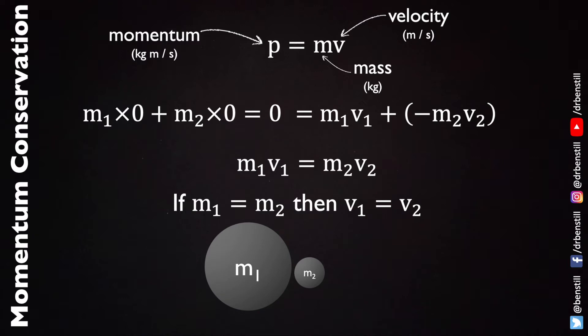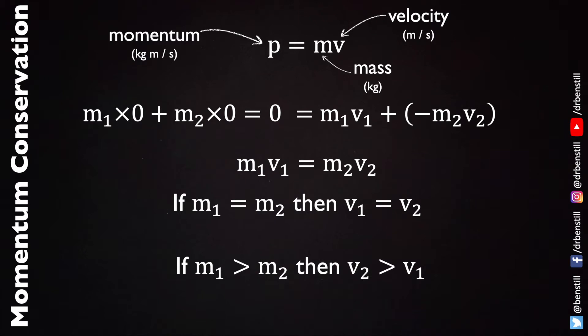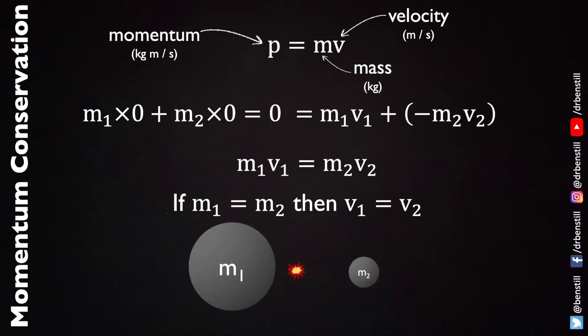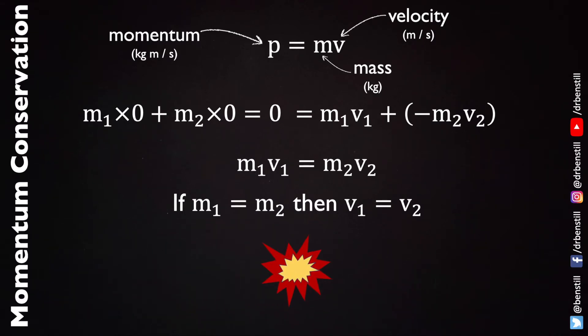But what if we had two objects where there was an imbalance in the mass, saying mass one was greater than mass two? Here when there was an explosion between them there would be a different scenario because we would end up with the fact that if mass one was greater than mass two then the velocity of object two which is the lighter one would have to be greater than the velocity of object one. Just to show you that simulation again, you see that object two goes off with a greater velocity than object one. That is because the product of the mass times velocity must be the same and so if its mass is lower then its velocity must be higher to make up for that shortfall.